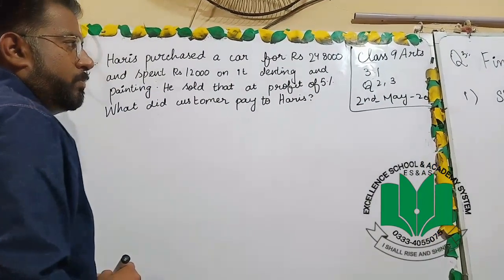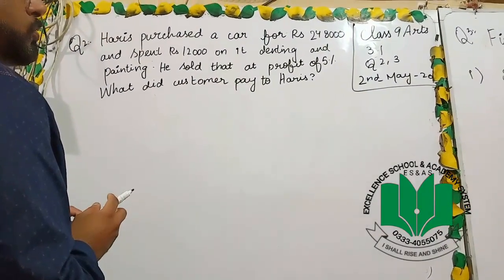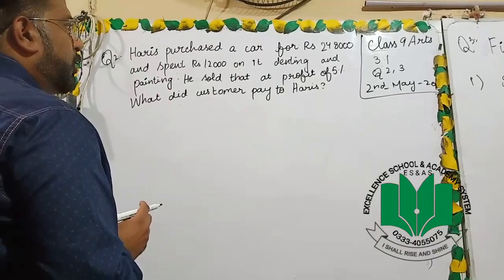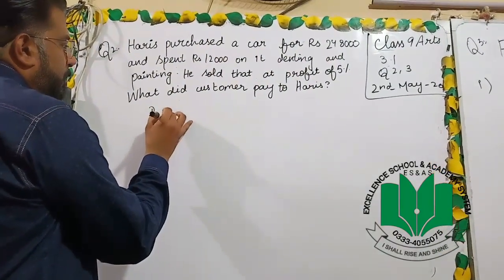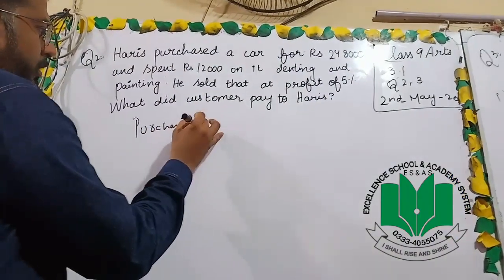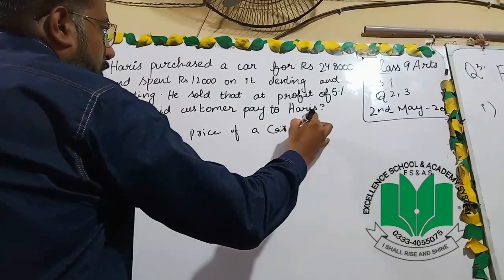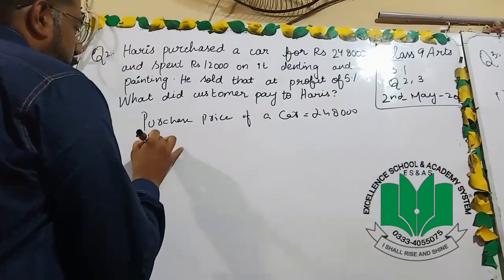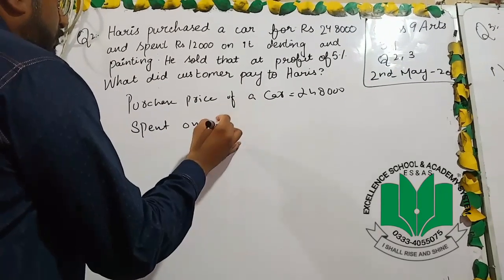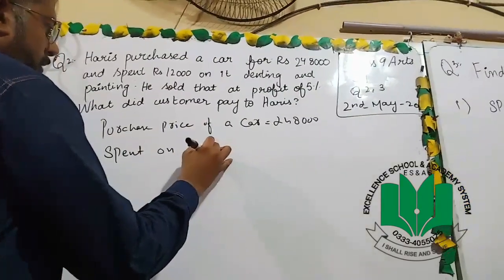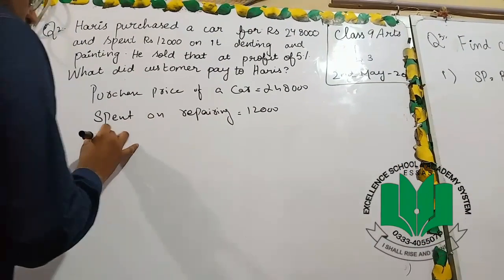It's size number 3.1, question number 2 and 3. Haris purchased a car for $248,000 and spent $12,000 on it. Purchase price of the car? Spent on repairing. How much money is it? Total cost?